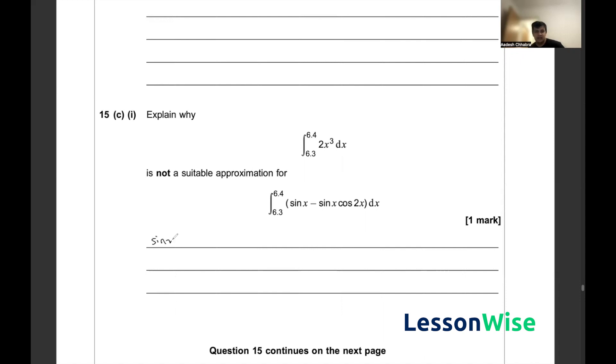Essentially our answer here is that sin x minus sin x cos 2x is only equal to 2x cubed only for small angles or small values of x, hence showing why it's not a valid assumption.